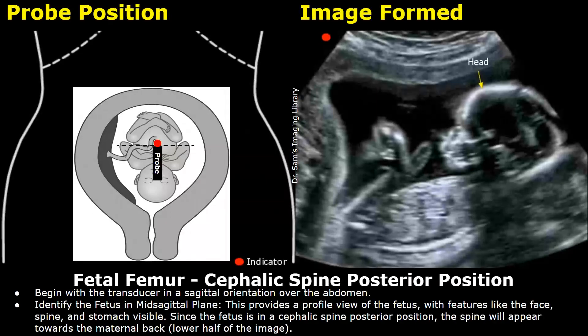Hello everyone, this is Dr. Sam, and this video is about fetal femur length ultrasound probe positioning. On the left we have a schematic diagram showing the fetal position in the uterus, the maternal abdomen, the ultrasound probe, and the indicator or orientation marker. On the right will be the image formed based on the probe's placement. We will be focusing on scanning the fetal femur.